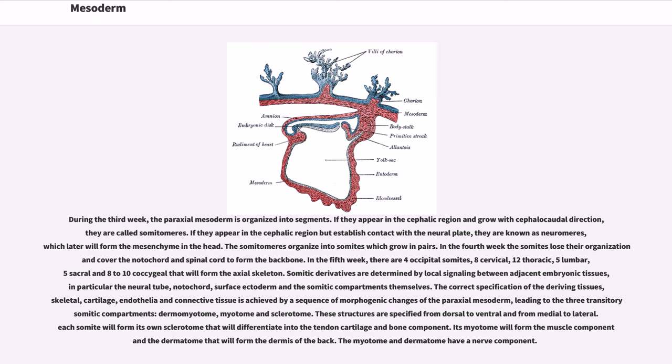Somitic derivatives are determined by local signaling between adjacent embryonic tissues, in particular the neural tube, notochord, surface ectoderm and the somitic compartments themselves. The correct specification of the deriving tissues—skeletal, cartilage, endothelia and connective tissue—is achieved by a sequence of morphogenic changes of the paraxial mesoderm, leading to the three transitory somitic compartments: dermamyotome, myotome and sclerotome. These structures are specified from dorsal to ventral and from medial to lateral. Each somite will form its own sclerotome that will differentiate into the tendon cartilage and bone component. Its myotome will form the muscle component and the dermatome that will form the dermis of the back. The myotome and dermatome have a nerve component.